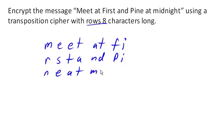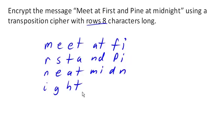Normally we'd do this using all uppercase characters. So we write out 'meet at first and pine at midnight.' Notice we've got a few spaces left at the end, so we pad the message with some random characters — maybe a P, X, and R — to fill it out. That is our message written down.